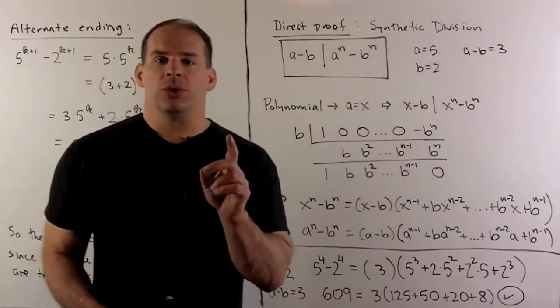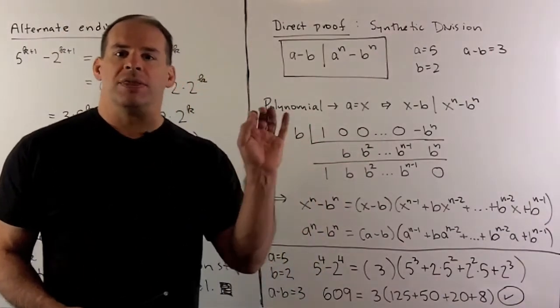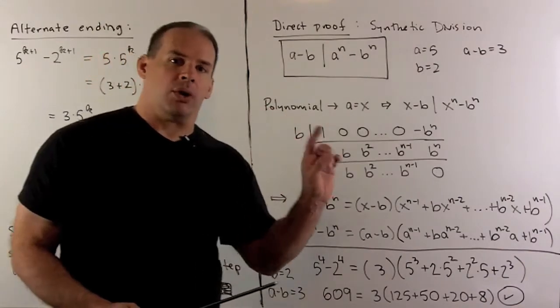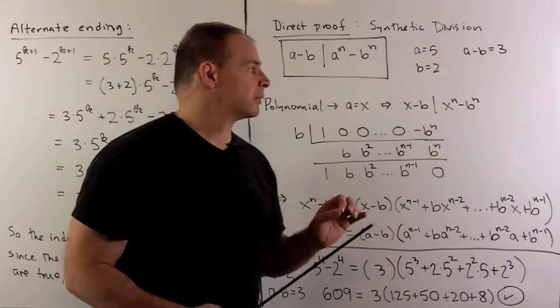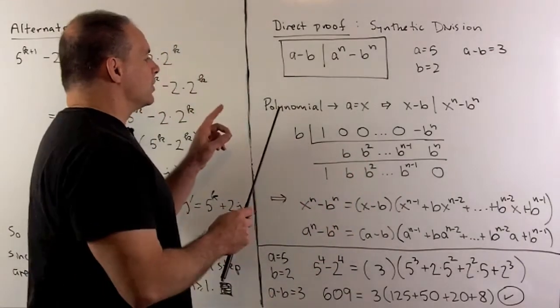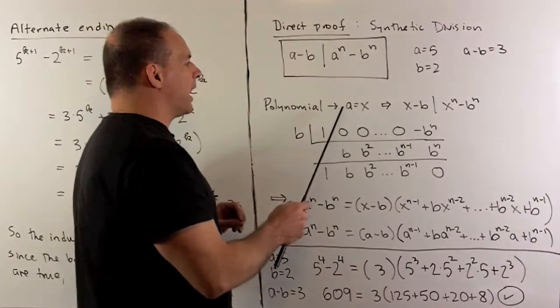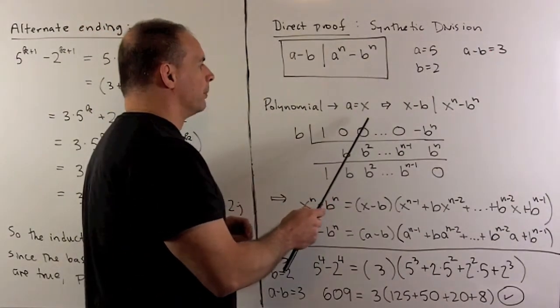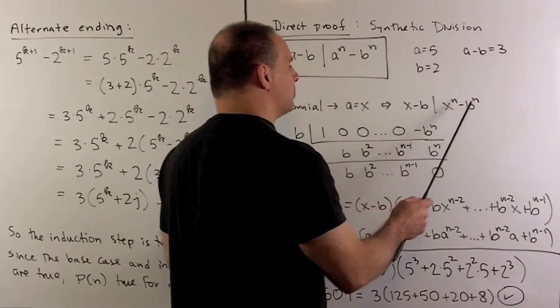Now, we could use a direct proof to see this. So for here, I'm going to use synthetic division. If you don't know synthetic division, you have to work it out using long division. So the idea is, I'm going to turn this into a polynomial equation by replacing my a with the variable x. So here I want to show that x minus b divides x to the n minus b to the n.